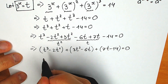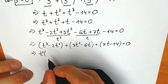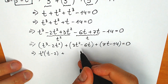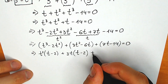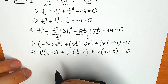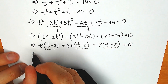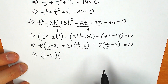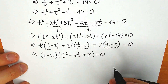From the first group, we factor t squared to get t squared times (t minus 2). From the second group, we factor 3t to get 3t times (t minus 2). From the last group, we factor 7 to get 7 times (t minus 2). We can see t minus 2 appears in every group, so we factor it out as common: (t minus 2)(t squared plus 3t plus 7) equals zero.